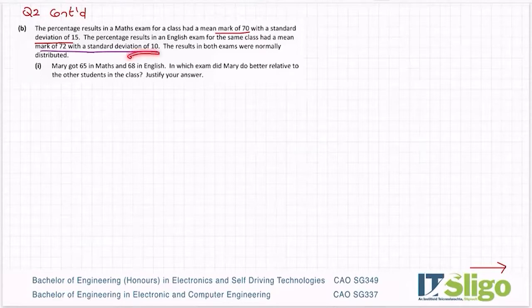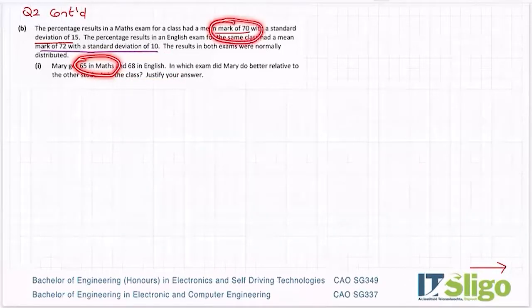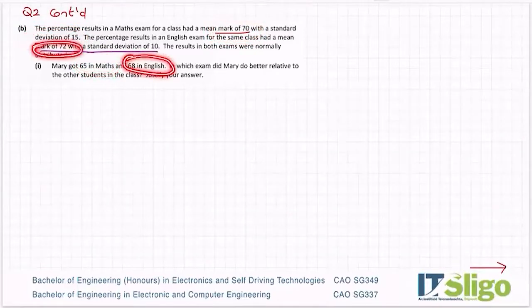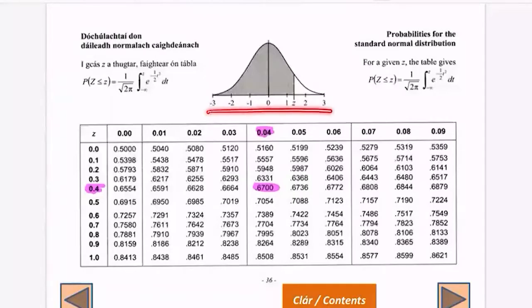This is where Z scores come on their own. In manufacturing, this would be used to compare two machines in a factory. You can only ever compare it to the mean and the standard deviation of that machine or in this question of the class. To look at them, you'd assume she did better in English.